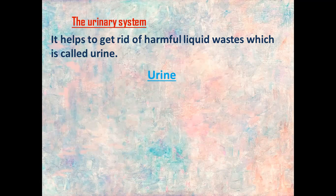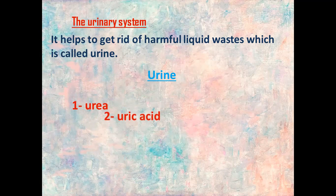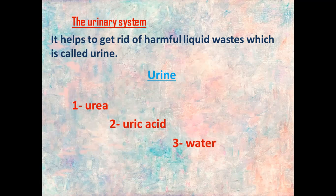What is urine made of? The urine, or liquid wastes, consists of four things. The first thing is called urea. The second thing is called uric acid. The third thing is called water. And the last thing is called salts. So urine is made of four things: urea, uric acid, water, and salts.